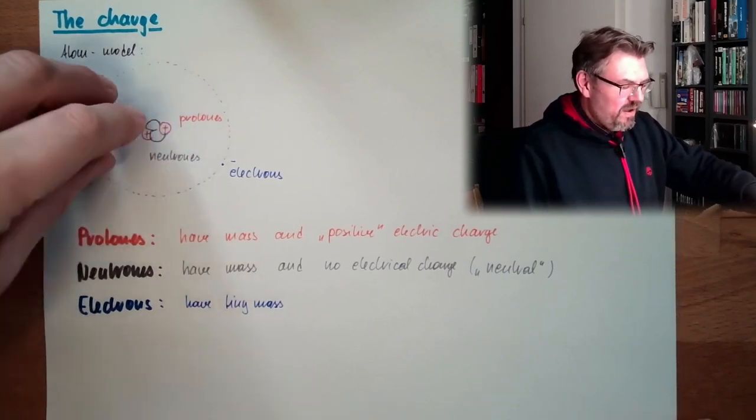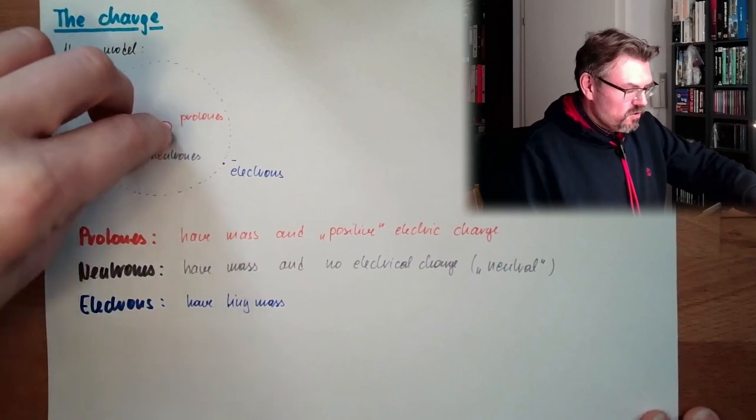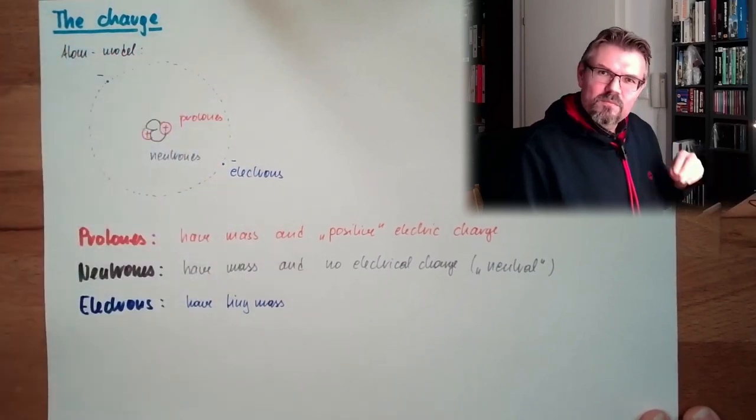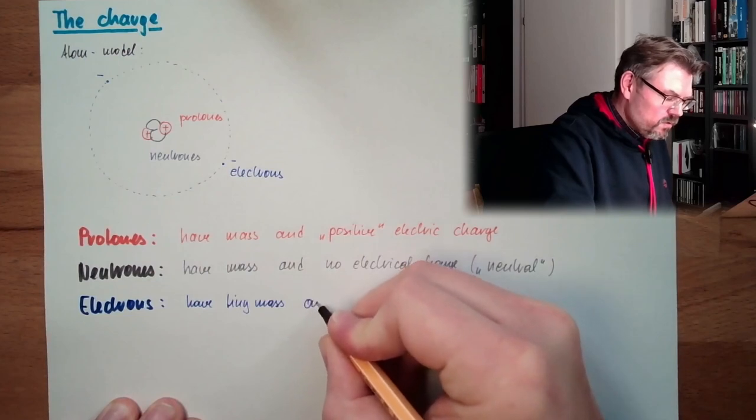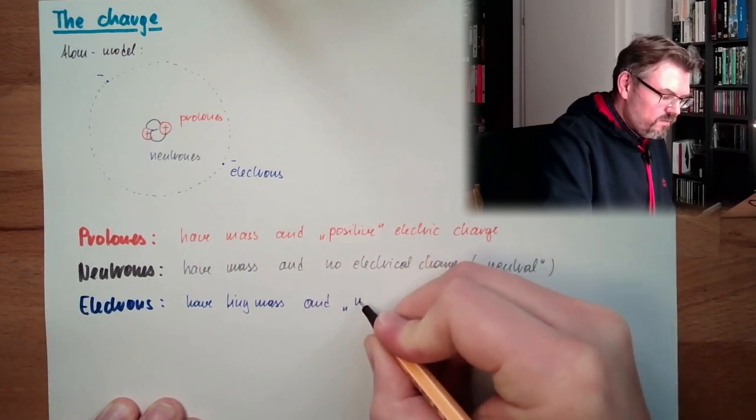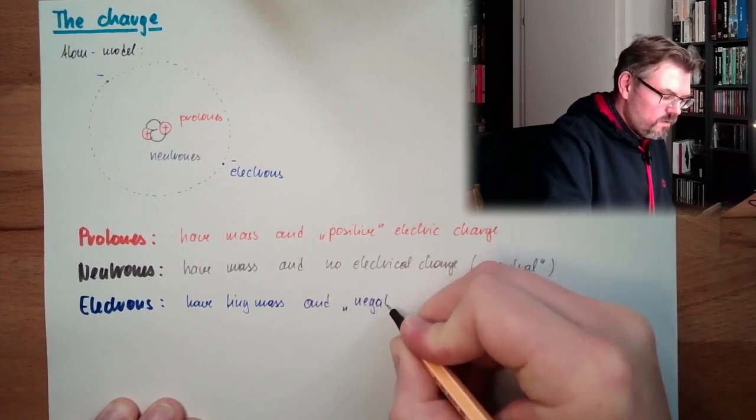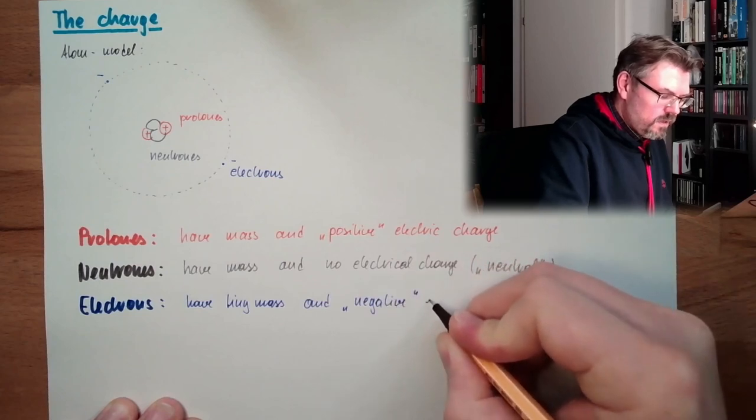So the mass of atom is very much concentrated in the middle of the atom, in the core. Have tiny mass and so-called negative electric charge.